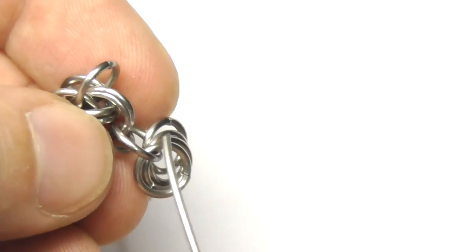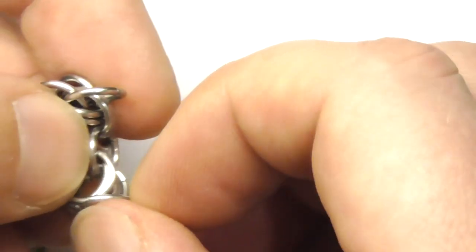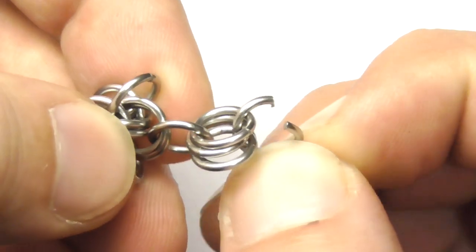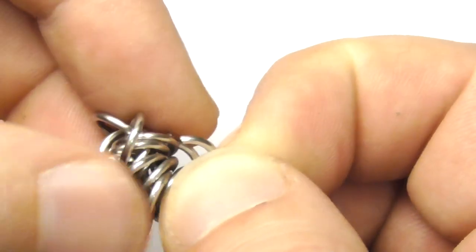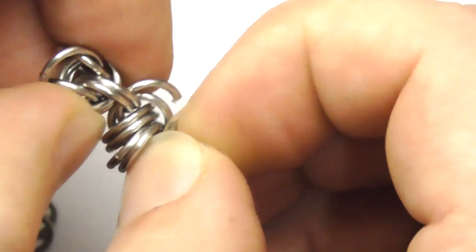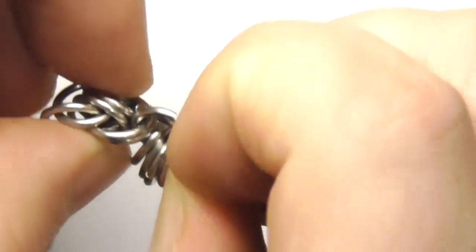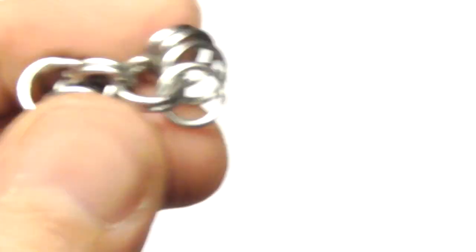Okay, now we need to double this ring. Let's take one open ring and that's a very simple operation - here through our four closed rings, and here through the element, through the unit that is already ready. Like that. Let's close it.